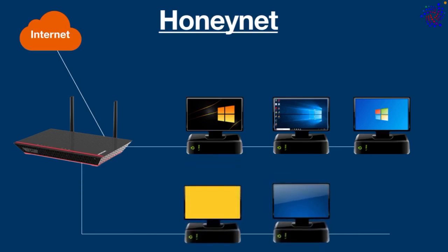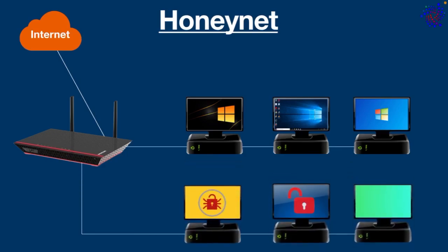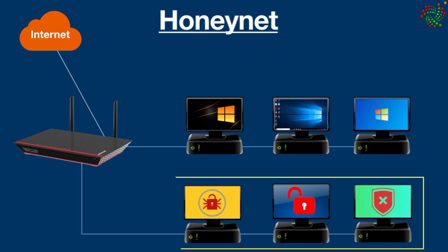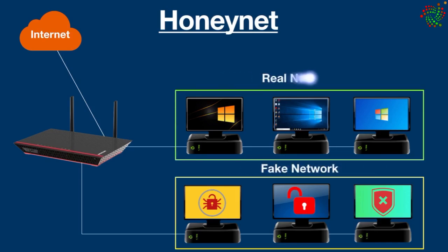It works pretty simply. All you have to do is design a network by simulating the characteristics of a real network, making it seem like an easy target. Basically, a honey net is created in such a way that it acts as a fake network, fooling potential attackers into believing that they are infiltrating a legitimate network.